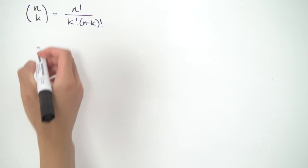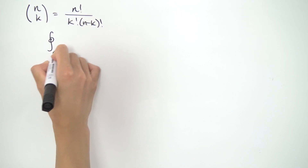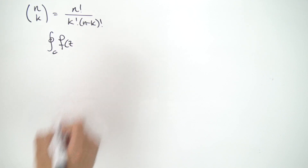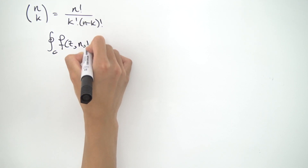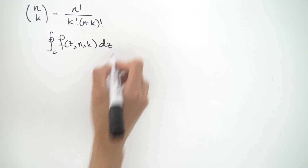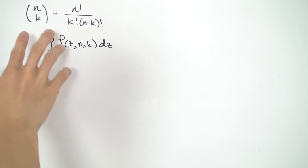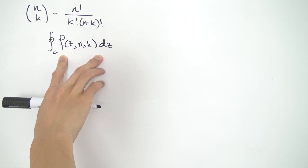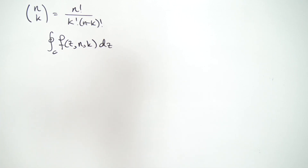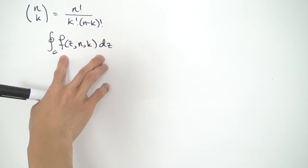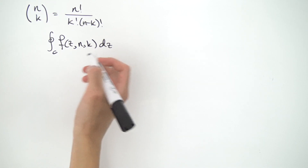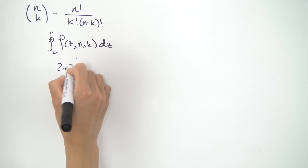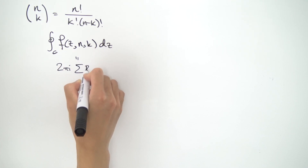So how do we get started? Well, let's just start off with the contour integral over some simple closed curve C of some complex function f(z), which will probably depend on n and k as well, integrated with respect to z. The idea is we want n choose k to be equal to this contour integral, and we're trying to find what this function f(z) could be.